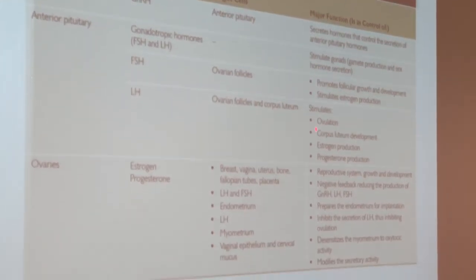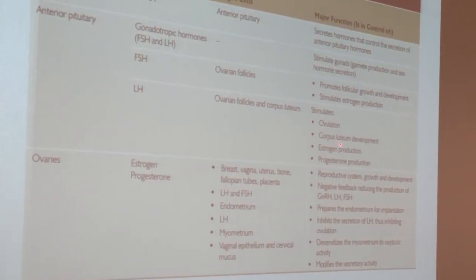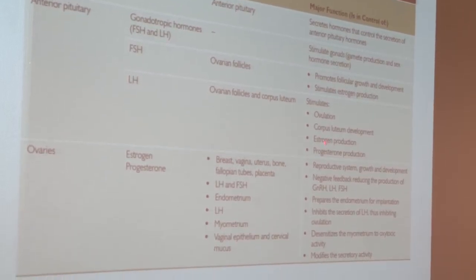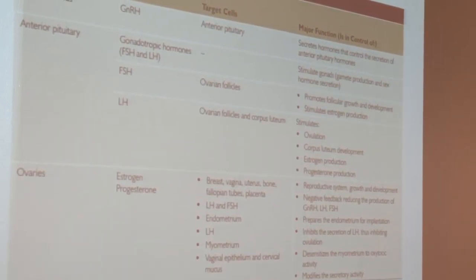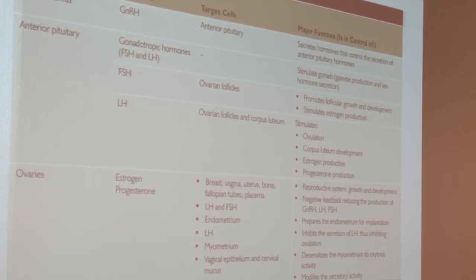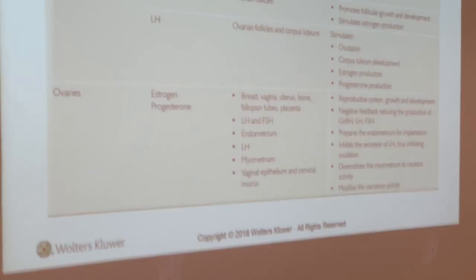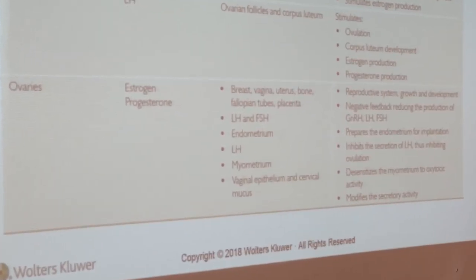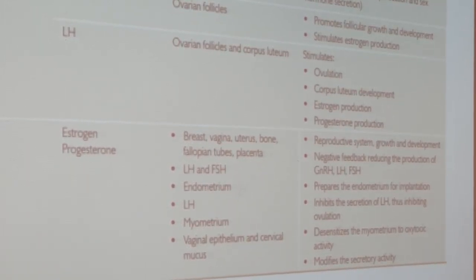LH is what we need for ovulation and corpus luteum development. The corpus luteum puts out progesterone. Progesterone keeps the corpus luteum alive, because the corpus luteum supports the baby until the placenta takes over. It takes a few weeks for the placenta to grow.